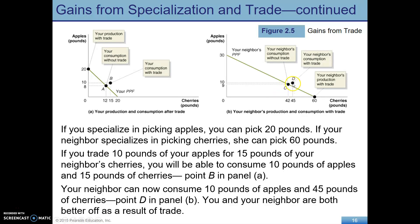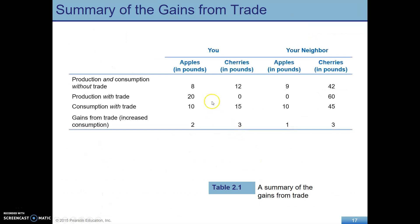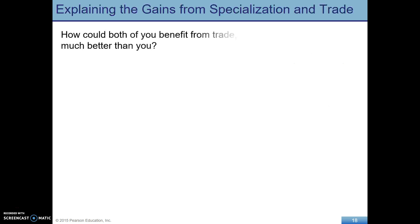Your consumption now with trade is higher compared to before, and your neighbor is also better off — point D was unattainable before. Both of you are getting more of both apples and cherries. There's a range of mutually beneficial trades; this specific example is just one within that range. The big point is that with specialization, consumption after trade is higher for both parties. These gains aren't divided evenly — that depends on the terms of trade. Even though your neighbor had an absolute advantage in picking both fruits, both of you are better off from specializing and trading.